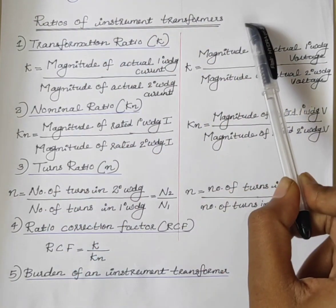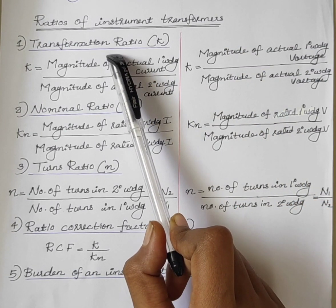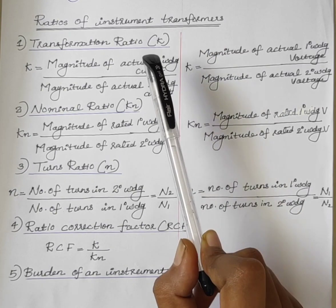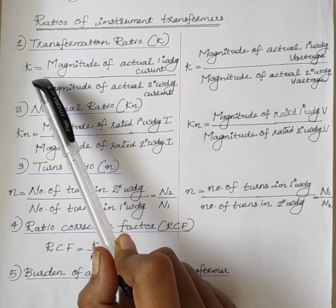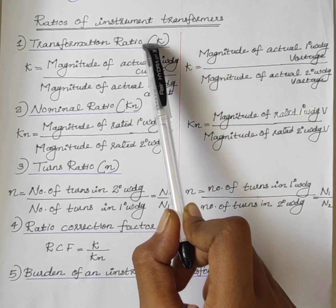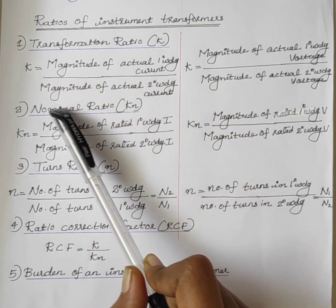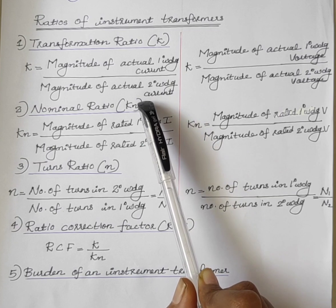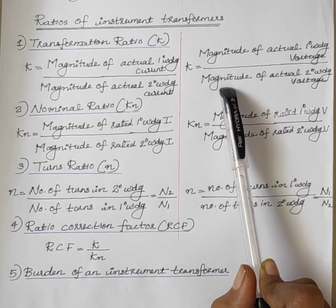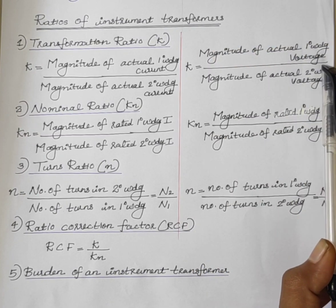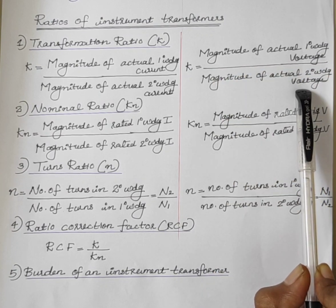Next, we will see the ratios of instrument transformers. The first one is transformation ratio, represented by K. In a current transformer, transformation ratio K is equal to the ratio of the magnitude of actual primary winding current to the magnitude of actual secondary winding current. In the case of a potential transformer, it is the ratio of the magnitude of actual primary winding voltage to the magnitude of actual secondary winding voltage.